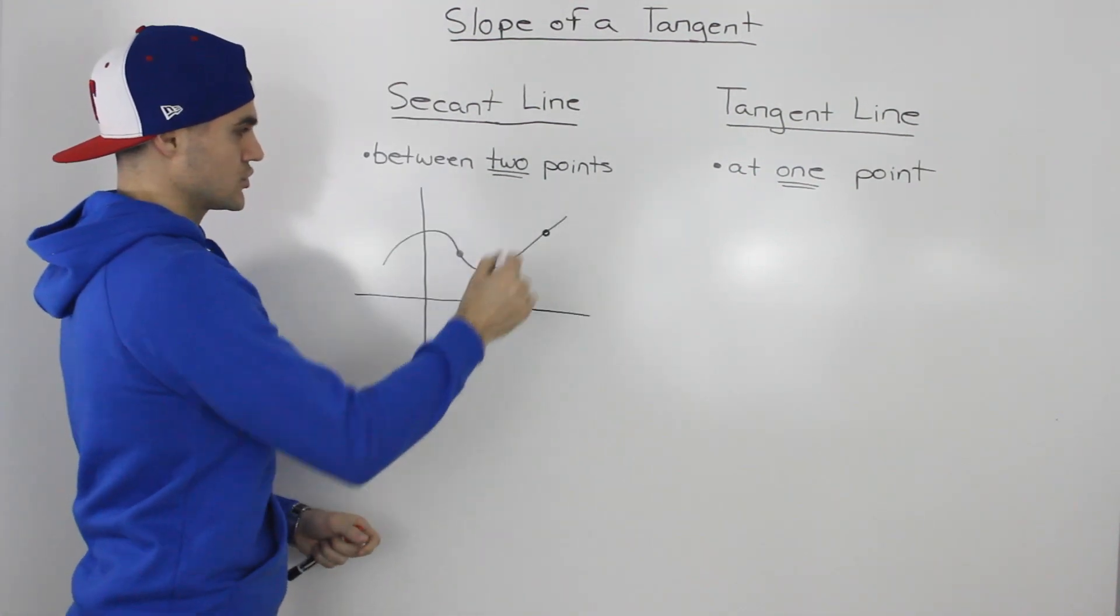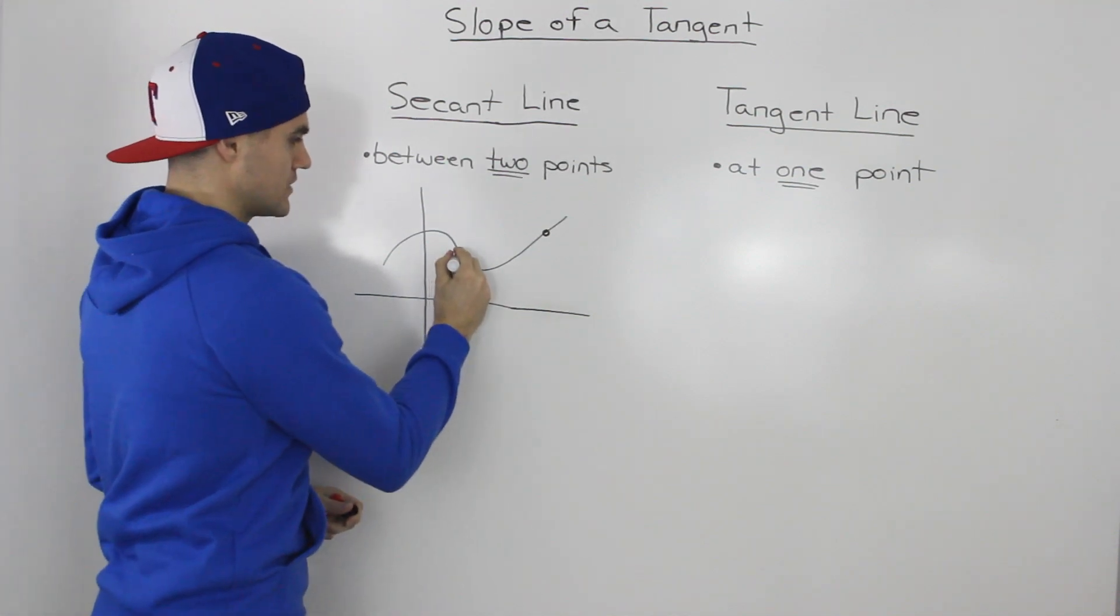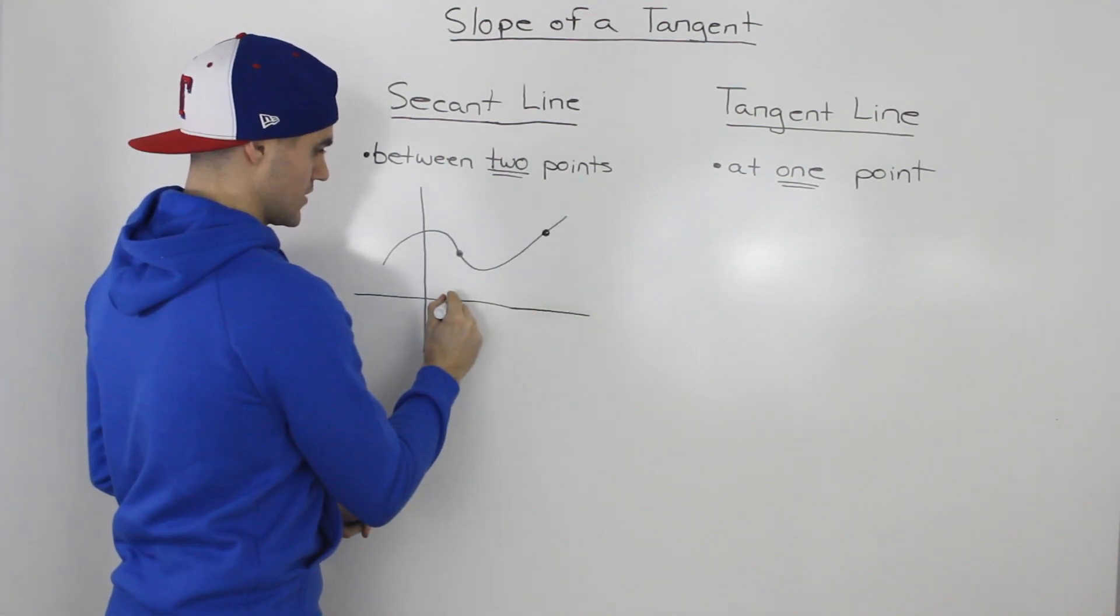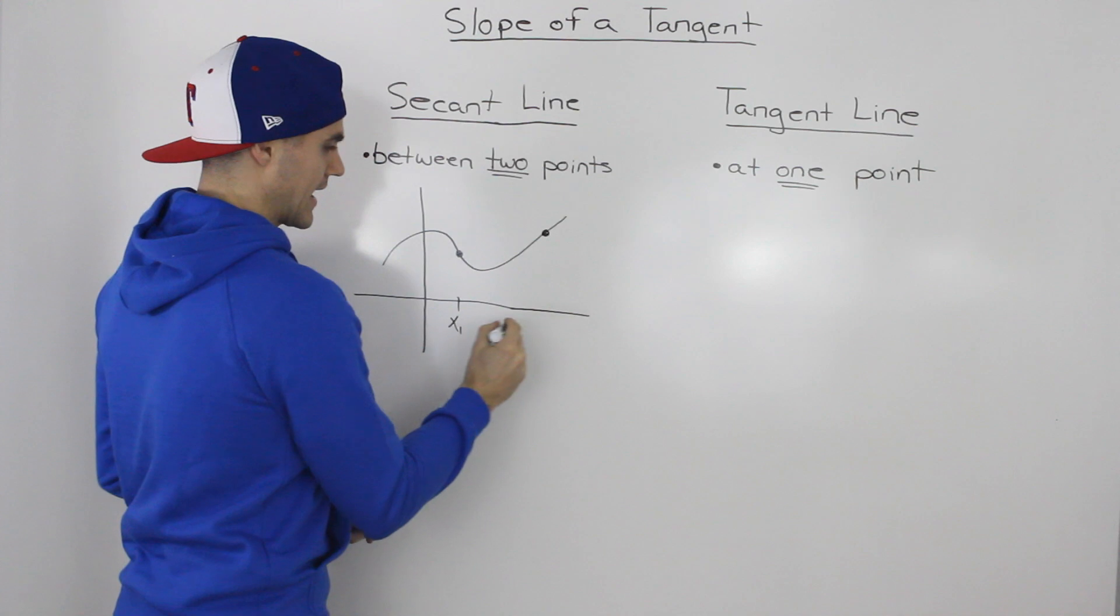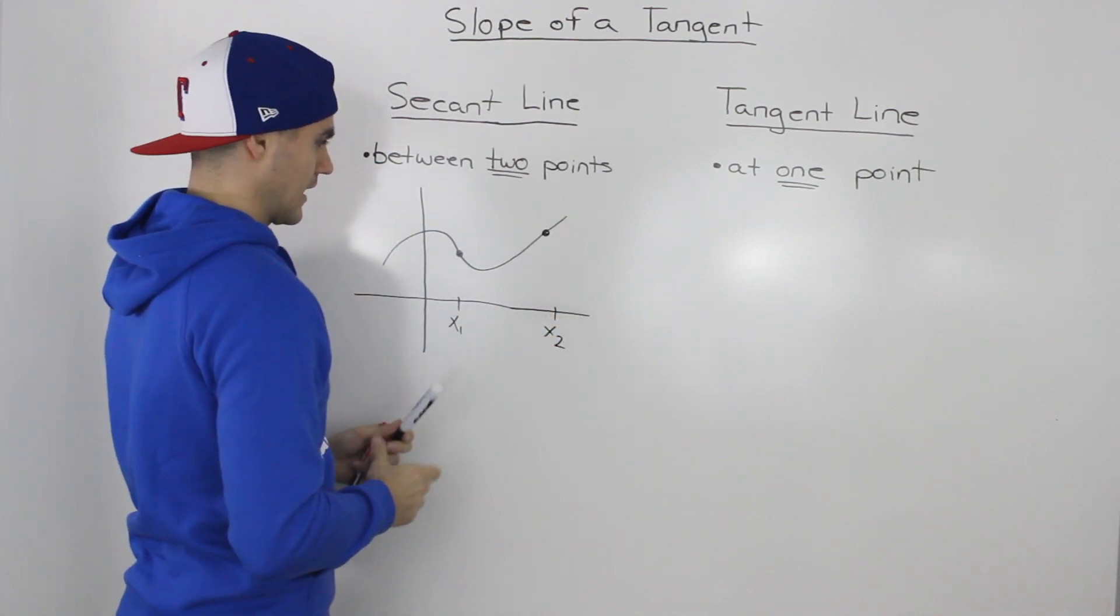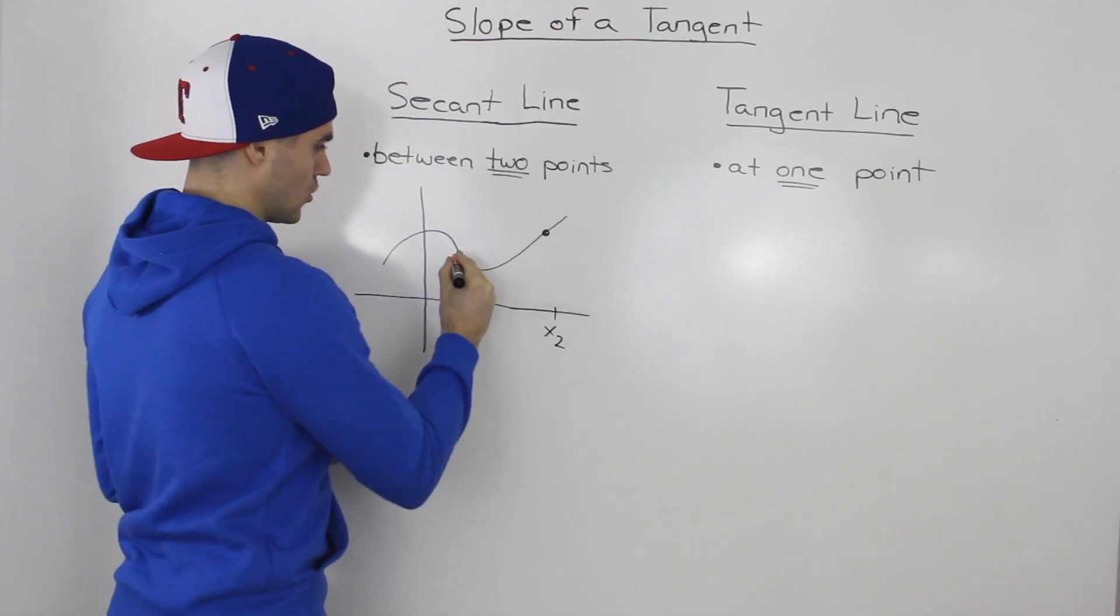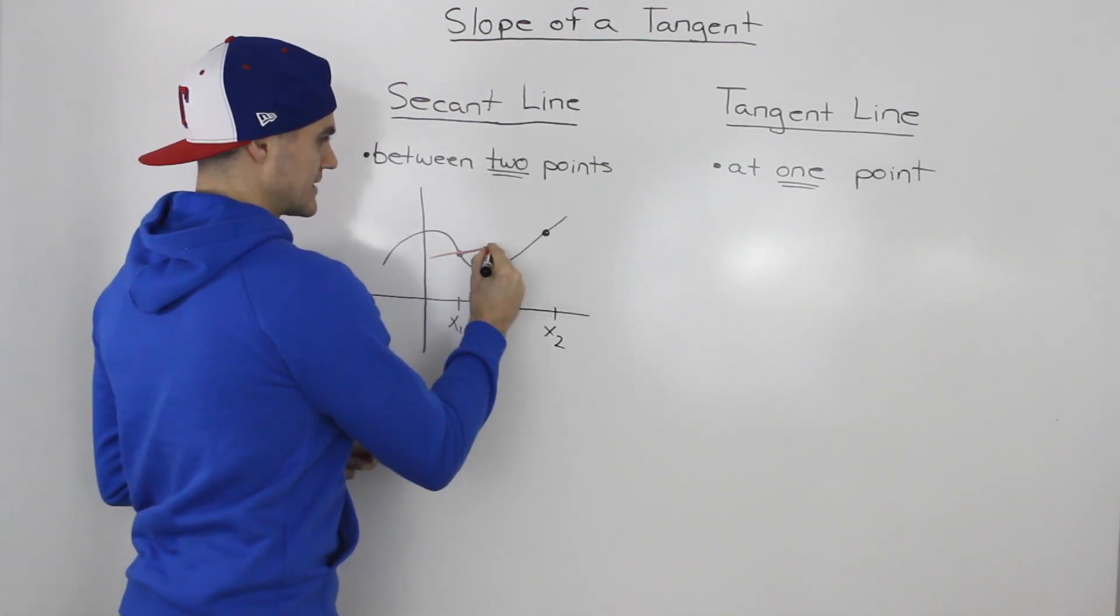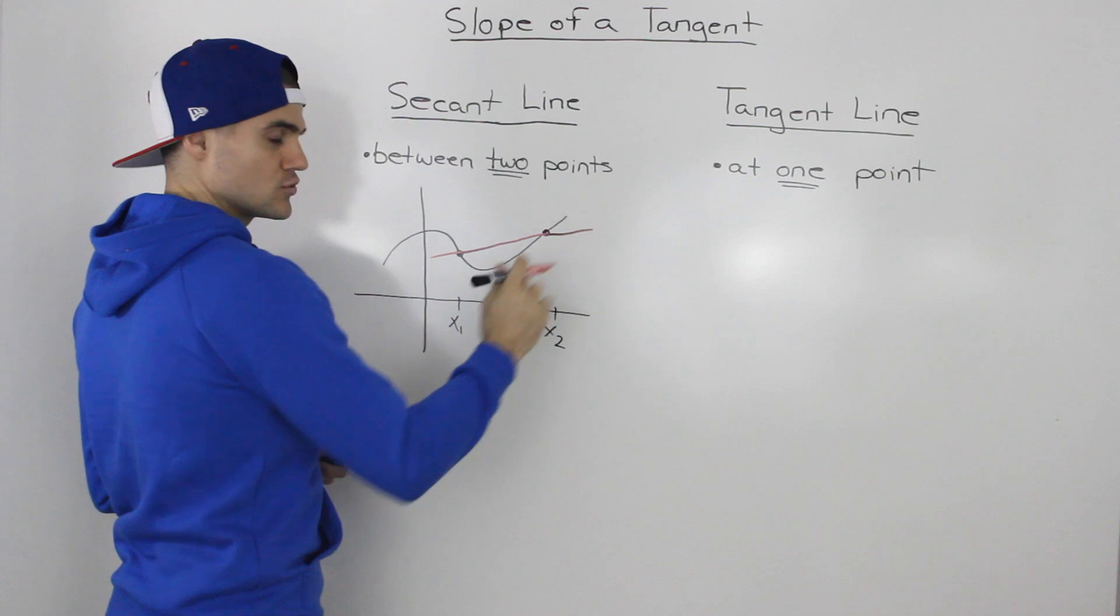So for example, let's say that we have this function drawn out and we have these two points here. This point is at x1, and then this point here is at x2, and we want to find what the slope of that secant line through the two points would be.